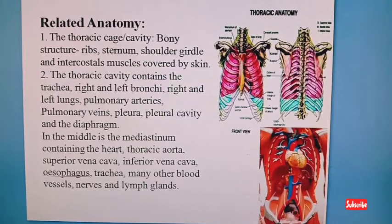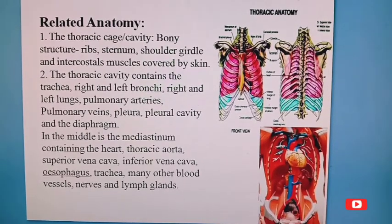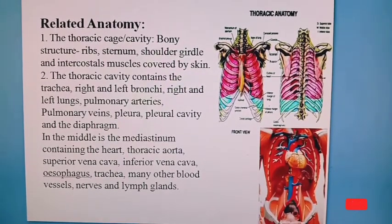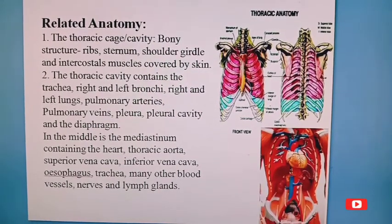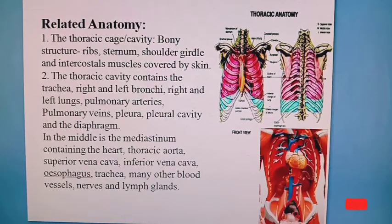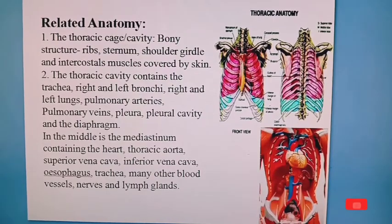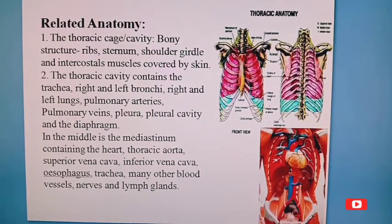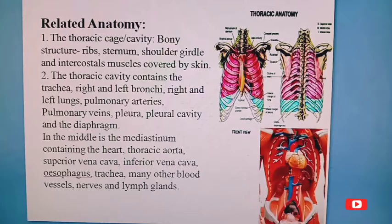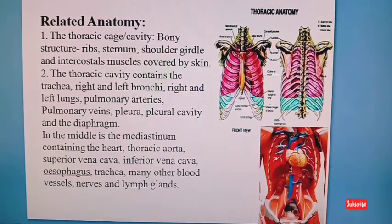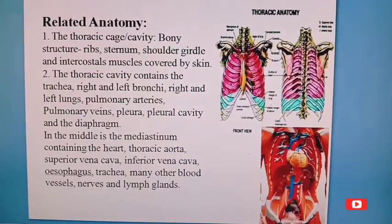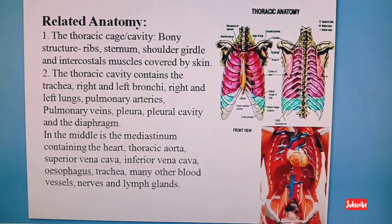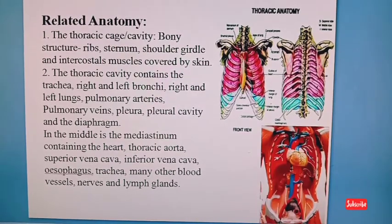What are the related anatomy and physiology? The related anatomy of chest injury includes the thoracic cage or thoracic cavity — the bony structure that is ribs, sternum, shoulder girdle, and intercostal muscles covered by skin. This is also called the chest wall.